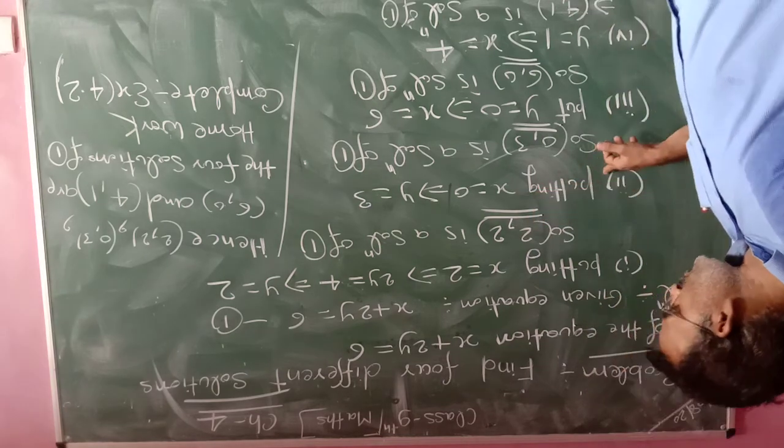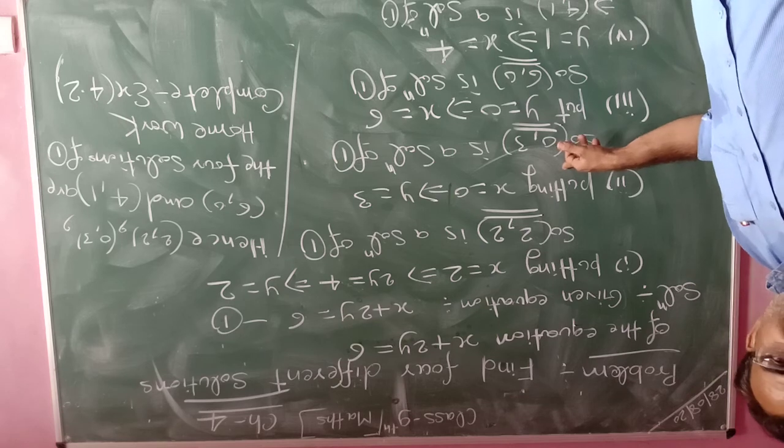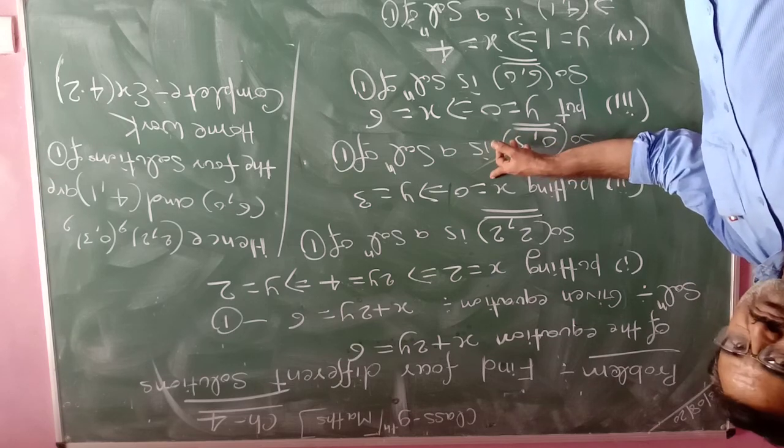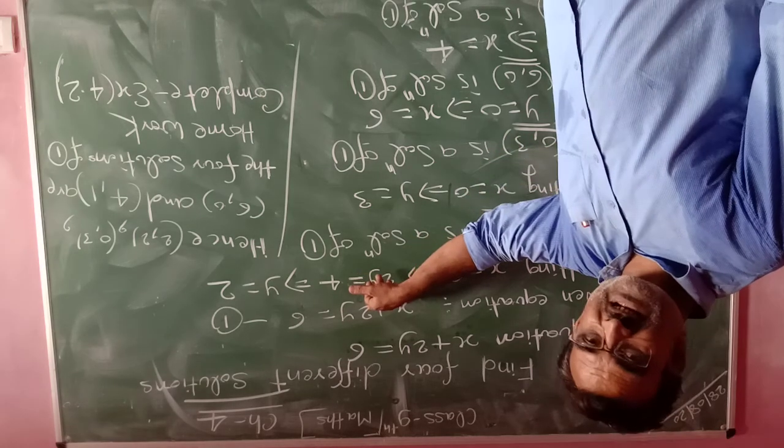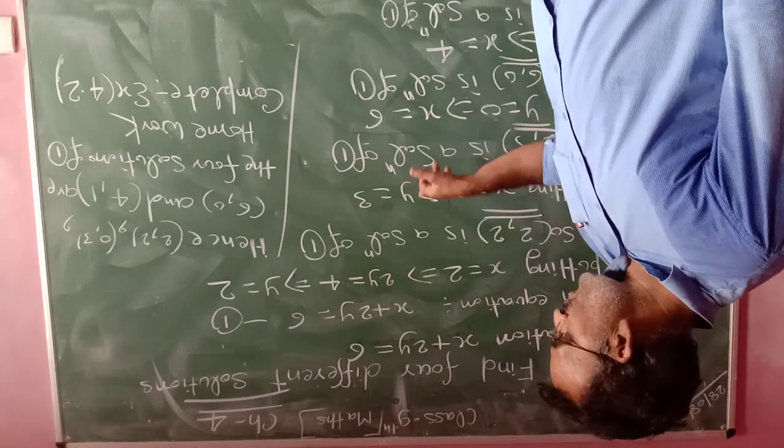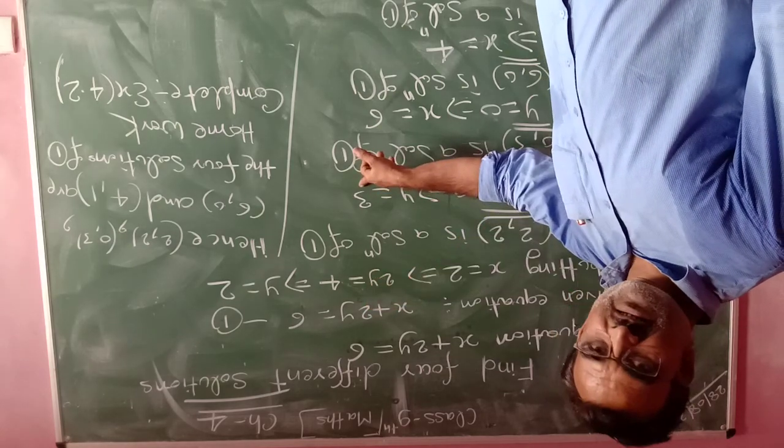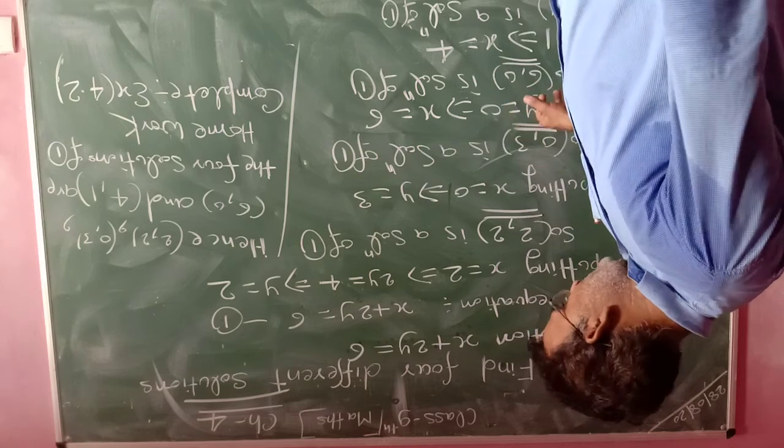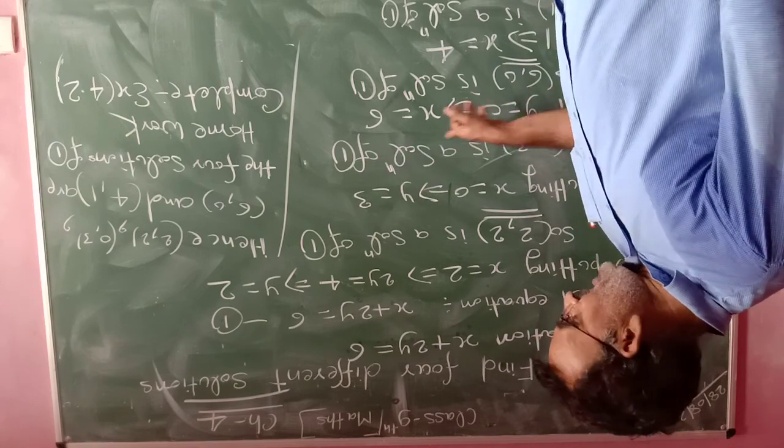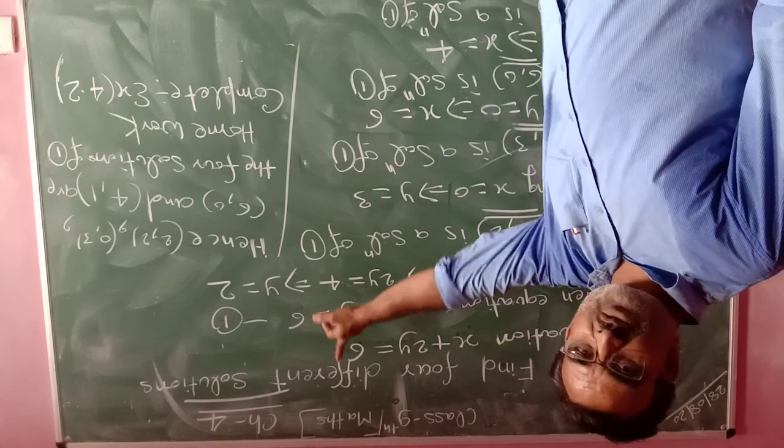Similarly, for the second solution, putting x equal to 0 in the given equation, this becomes y equal to 3. So, 0 comma 3 is a correct solution of equation 1.